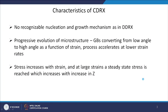What are the characteristics of continuous dynamic recrystallization? As we have seen in discontinuous dynamic recrystallization, there is a nucleation and growth mechanism, whereas in CDRx there is no separate nucleation and growth mechanism. Instead, there is progressive evolution of microstructure — it is a continuous kind of process where grain boundaries convert from low angle to high angle. Basically, low angle grain boundaries transform into high angle grain boundaries, through different mechanisms proposed as a function of strain.